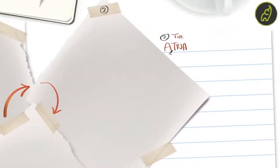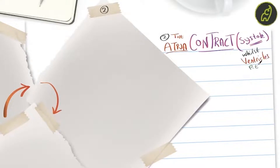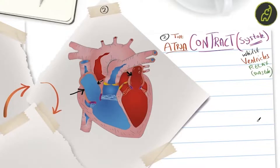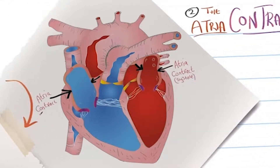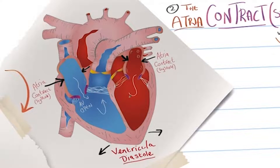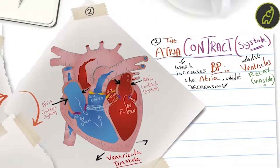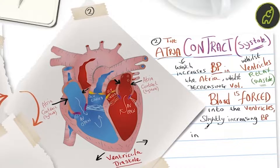Step two: the atria contract — systole — whilst the ventricles relax — diastole. The diagram shows the heart with the atria contracted and the ventricles relaxed, with blood flow from the atria into the ventricles due to the AV valves being open, and the semilunar valves still closed. The atria contracting increases blood pressure in the atria whilst decreasing blood volume. Blood is forced into the ventricles, slightly increasing blood pressure in these chambers.